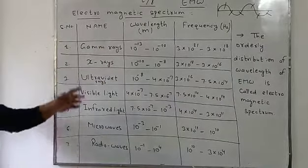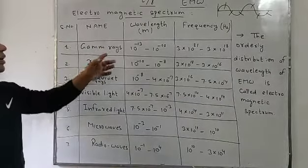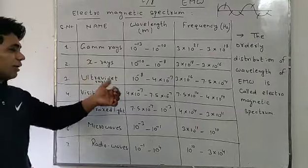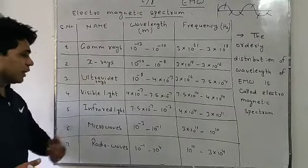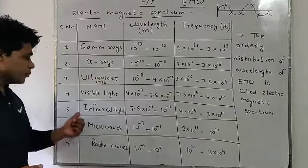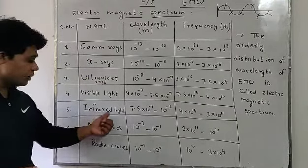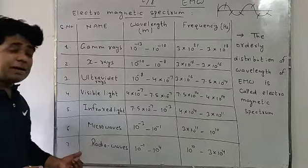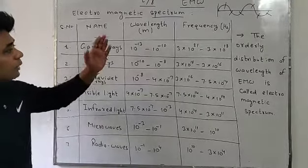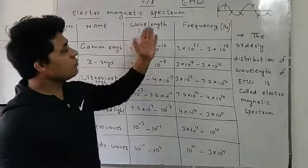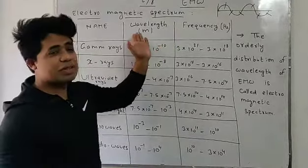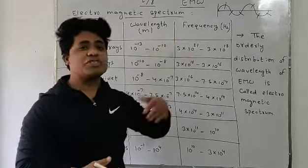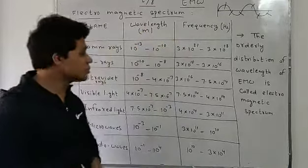There are 7 parts: gamma rays, X-rays, ultraviolet rays, visible light, infrared, microwave, and radio waves. Their wavelengths are given in meters and frequencies in hertz.